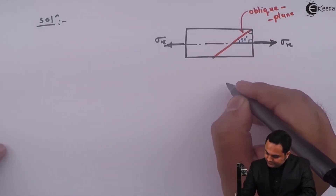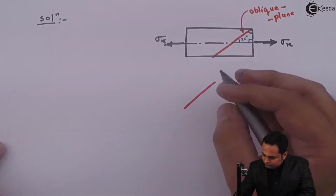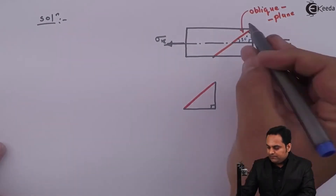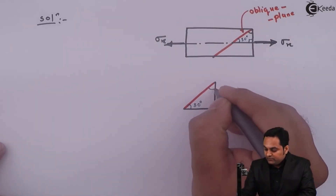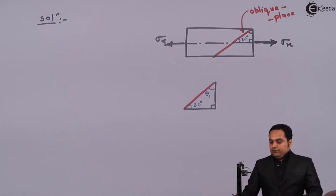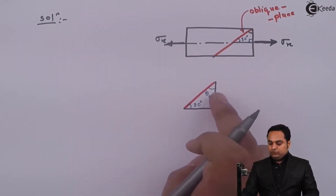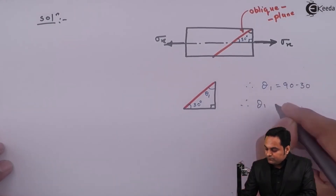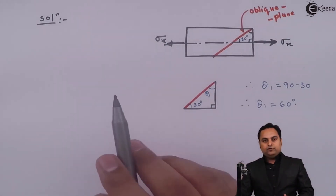I'll separate the triangle here. In the problem, the angle of the oblique plane is given with respect to the horizontal — that is 30 degrees — but in the formula we require the angle with respect to the vertical, called theta 1. While deriving the formula for all kinds of stresses, the angle was taken of the oblique plane with respect to the vertical. So therefore, theta 1 will be 90 minus 30, which is 60 degrees.